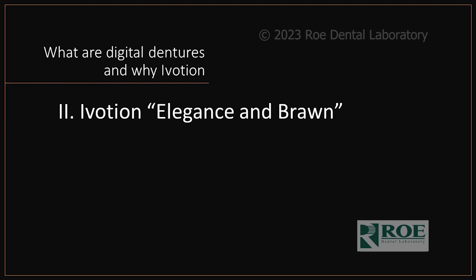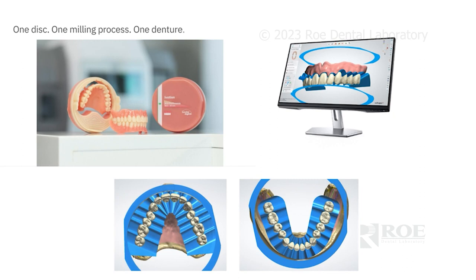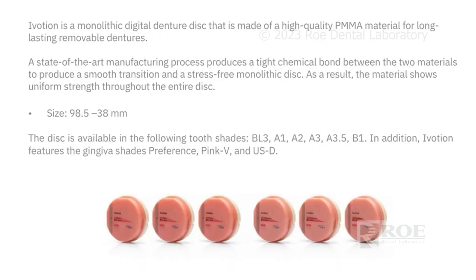So why iVotion? Let's go through all its elegance and capability. The iVotion denture is a one-disc, one-milling, one-denture process. It has fantastic design software that seamlessly incorporates into the final product. The iVotion is a monolithic digital denture made of high-quality polymethylmethacrylate material for long-lasting removable dentures. It comes in various tooth shades as well as gingival shades such as Preference and Pink V.